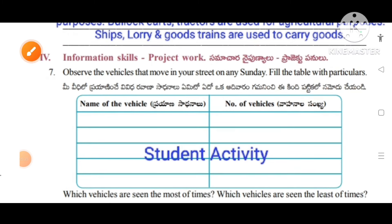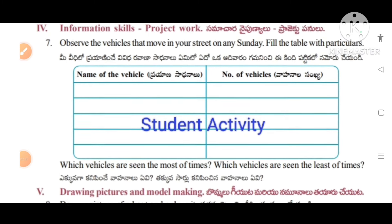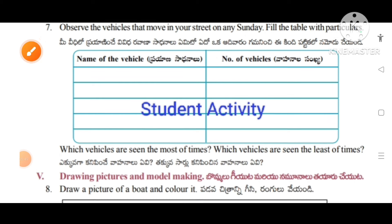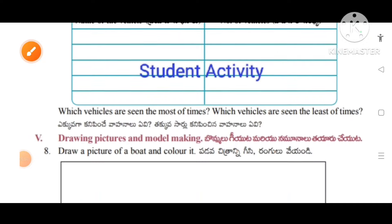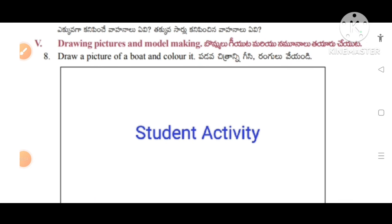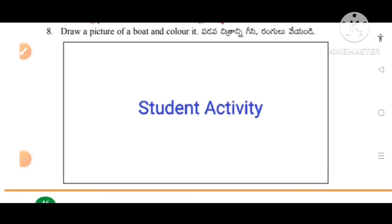Rule number four: information skill — project work. Observe the vehicles that move in your street or any street on any Sunday and fill the table with particulars — student activity. Rule number five: drawing pictures and model making — draw a picture of a boat and color it — student activity.